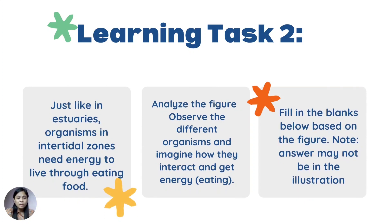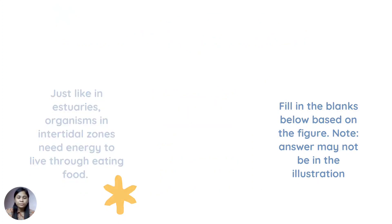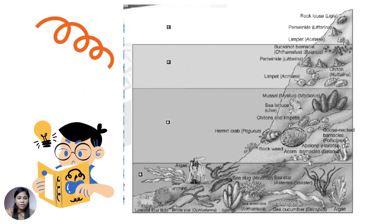For learning task number two, just like in estuaries, organisms in intertidal zones need energy to live through eating food. Analyze the figure and observe the different organisms and imagine how they interact and get energy through eating. Fill in the blanks based on the figure. Note: answers may not be in the illustration. And this is the figure.